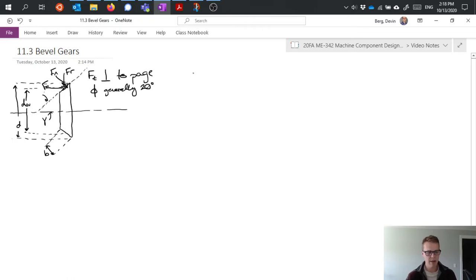So that average diameter we can quantify by saying it's equal to that outer diameter minus the face width times sine gamma. So that's just the projection of the face width onto that coordinate direction.